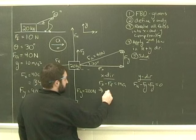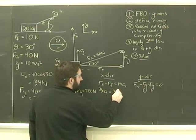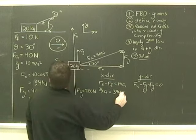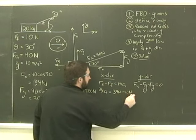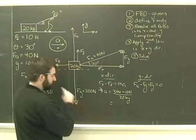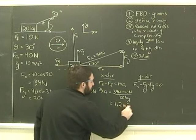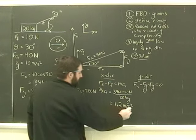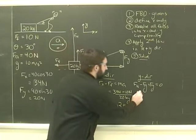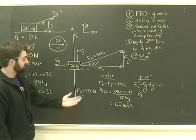So a therefore is going to be equal to 34 newtons minus 10 newtons divided by 20 kilograms, which equals 1.2 meters per second squared. Going for part b, because that's easy, a is 1.2 meters per second squared. It's positive, so it's to the right.